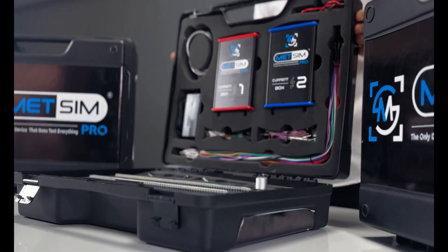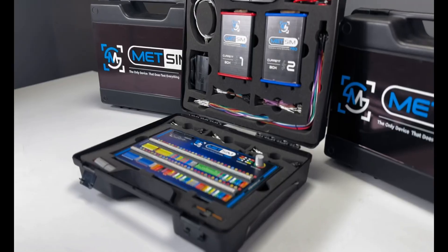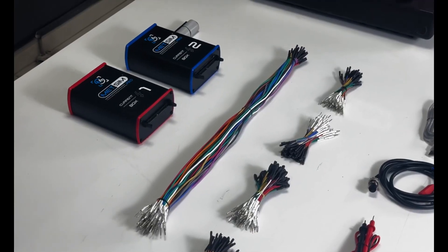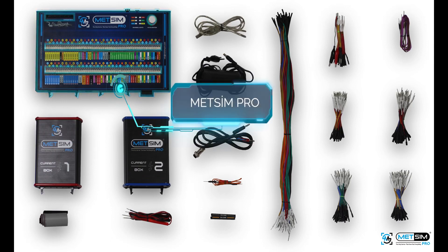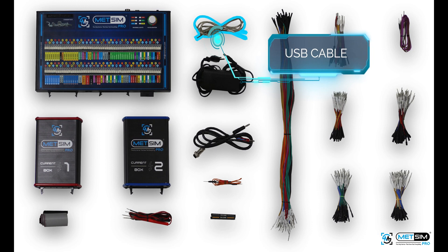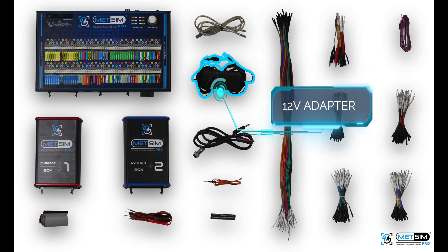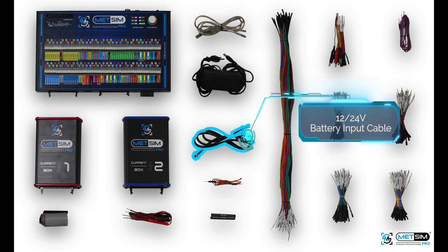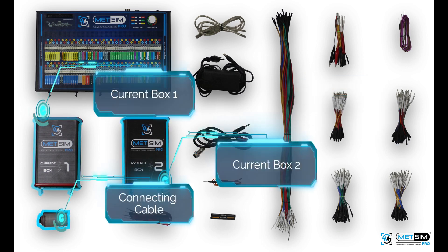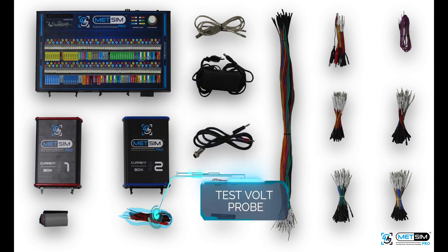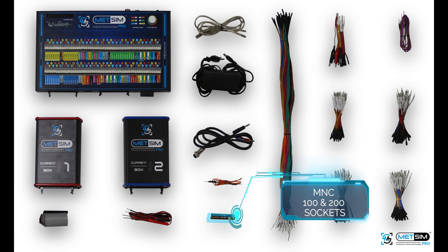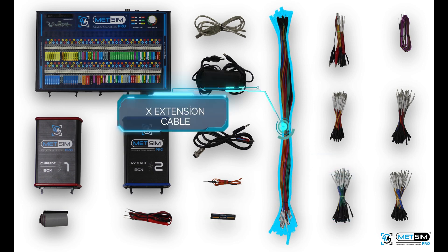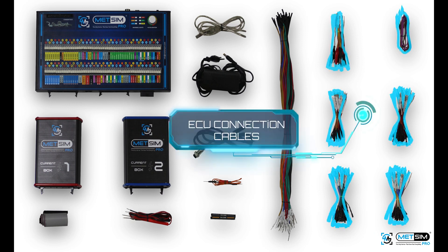Let's open the bag together. Inside the bag, you'll find the Metsim Pro device, the USB cable for connecting to the computer interface, the 12V adapter, the 12/24 volt battery input cable, the current box 1 to 2 for injectors, the connecting cable, test volt probe, component test probe, MNC 100 and 200 sockets for easy connection in gasoline cars, X extension cable, and ECU cables for different situations.